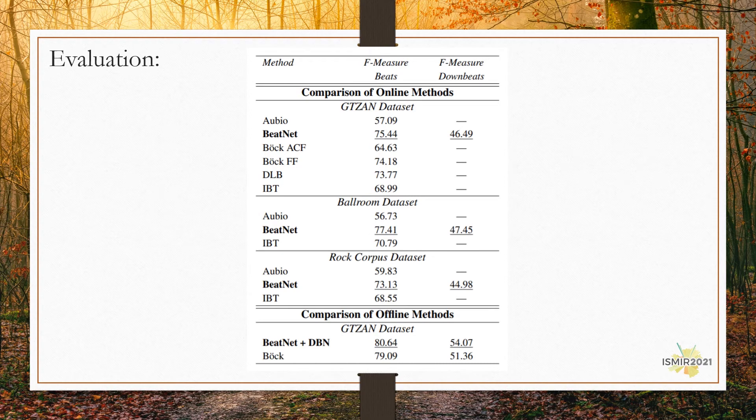The evaluation table includes the F-measure performance of the proposed model against several other online models. Note that for the supervised models, only the results of unseen datasets in the training stages are reported. As demonstrated, the BeatNet beat tracking outperforms all models. It accomplishes the online downbeat tracking jointly. Moreover, it is around four times faster than the DLB model, which is another sampling-based model we proposed earlier.